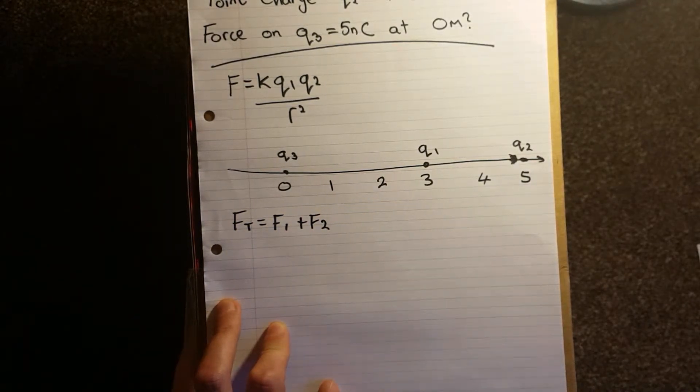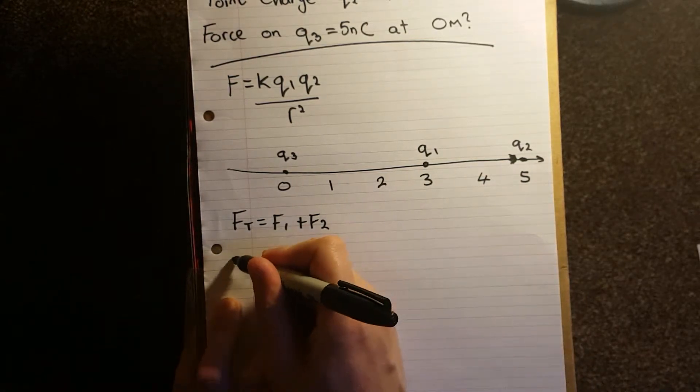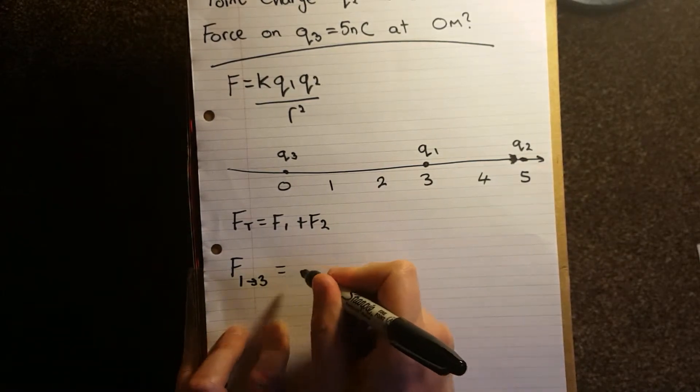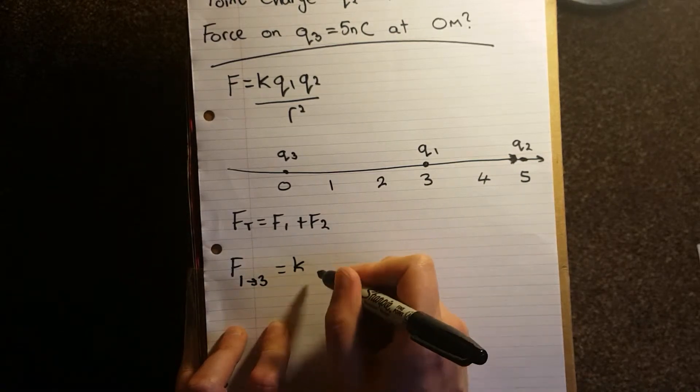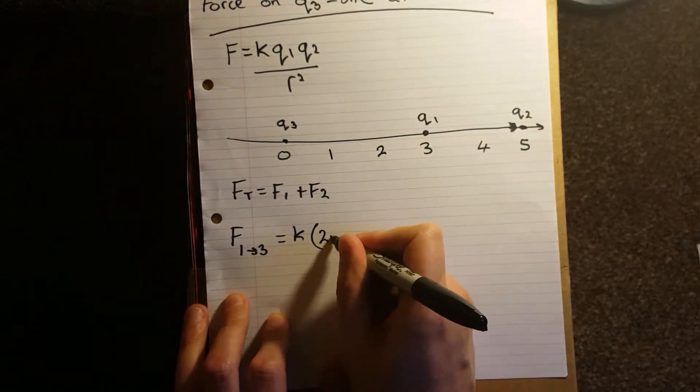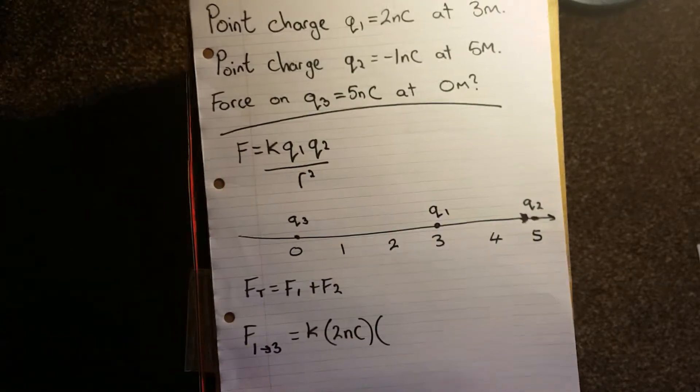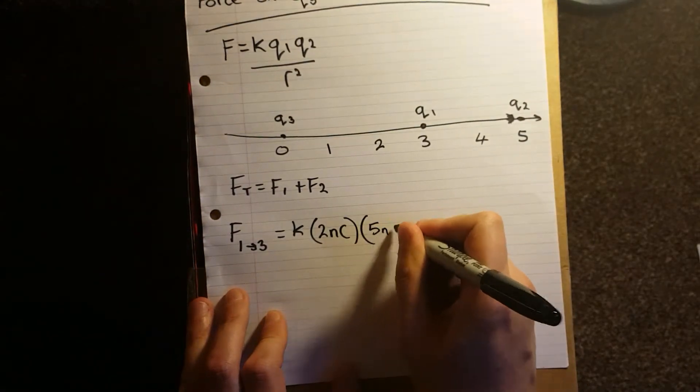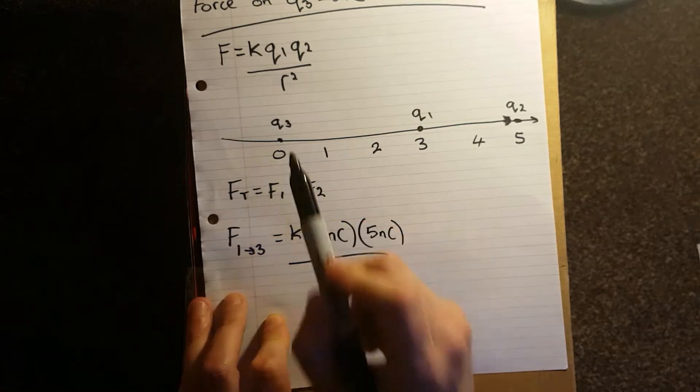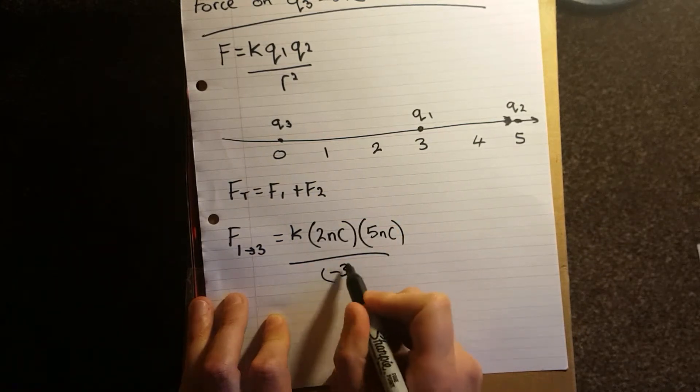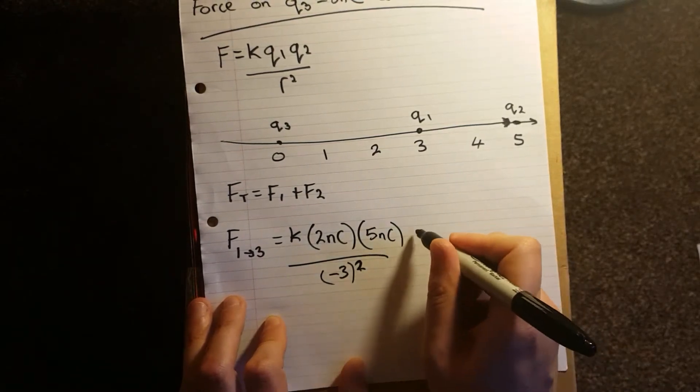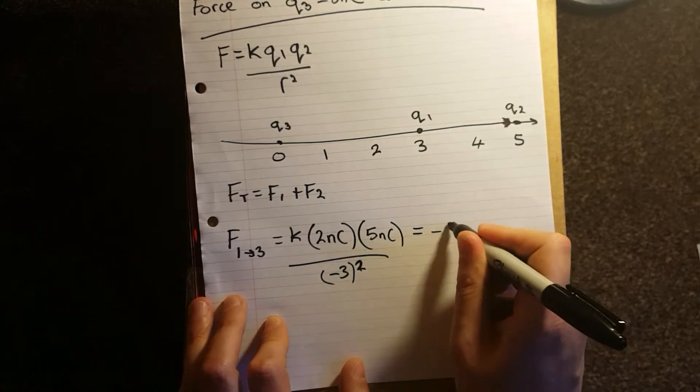The force for Q1 and Q3, so we'll say F1 to 3, is equal to Coulomb's constant. Q1 is 2 nano coulombs. Q3 is 5 nano coulombs. And the distance between them is 1, 2, 3. Minus 3 squared. This is minus 8 nano newtons.